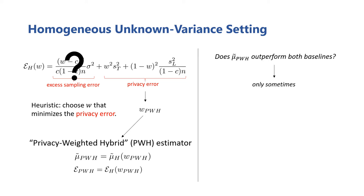We can now ask the same question of this PWH estimator as we did before with the KVH estimator: does it outperform both baselines? Our analysis was able to show that there are indeed some parameter regimes where the PWH estimator outperforms both simultaneously, and we were able to precisely determine what those regimes are. But, unsurprisingly, since it's based on a heuristic, it doesn't always outperform both simultaneously.